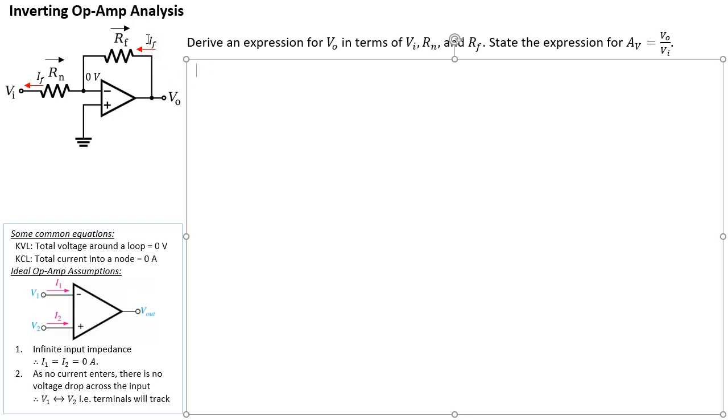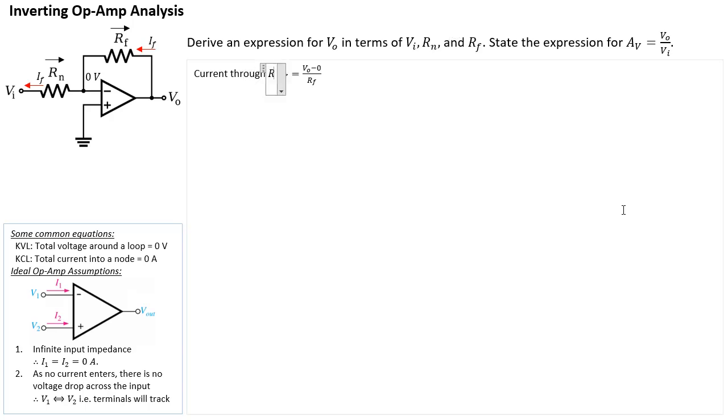So first thing we do is let's write an equation for this IF. You're just using Ohm's law. So that's IF. I equals V over R. So the voltage, well, the voltage is positive on the right-hand side. See the arrow is on the right-hand side. And the right-hand side is labeled as VO. So we say VO minus the tail end of the voltage across RF, which is zero volts. So it's zero divided by RF. So that's our first expression. So the current through RF is given by that.